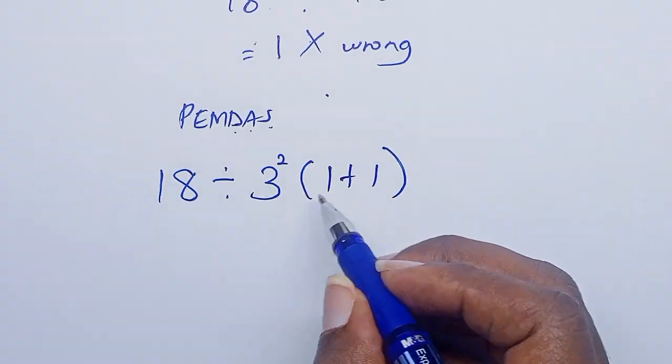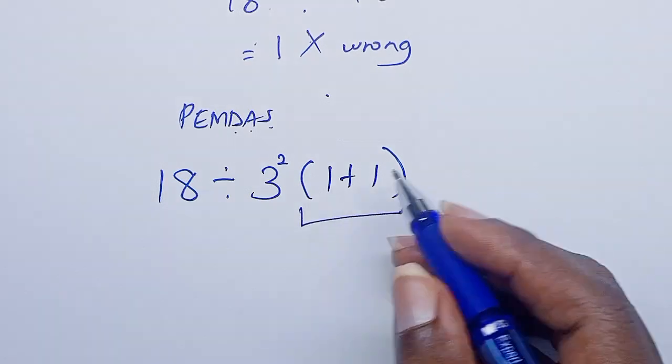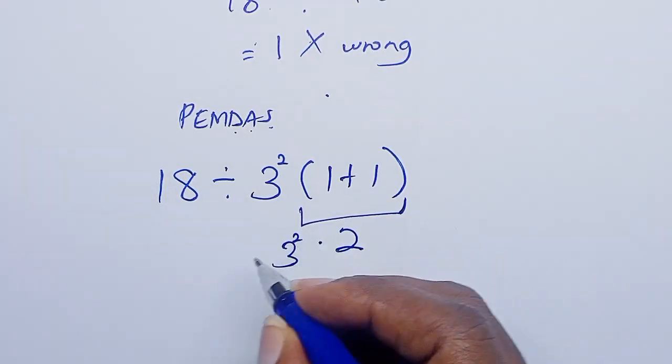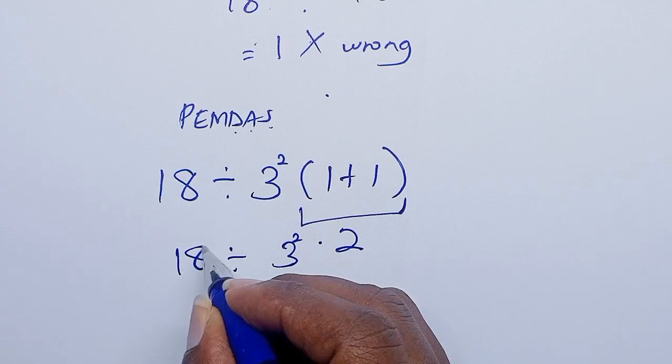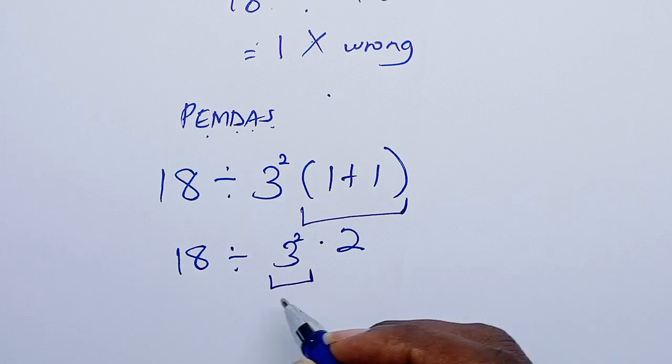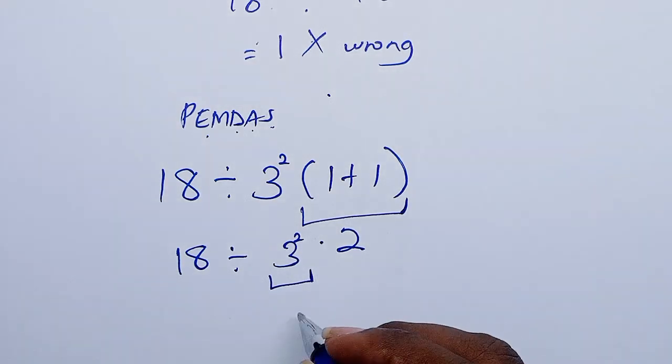As you can see we have parentheses, so we work it out first. 1 plus 1 is 2, then multiplied by 3 squared divided by... The next is exponents, so 3 squared is 9.